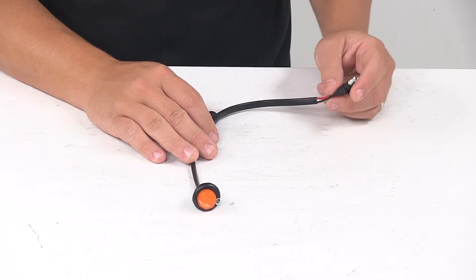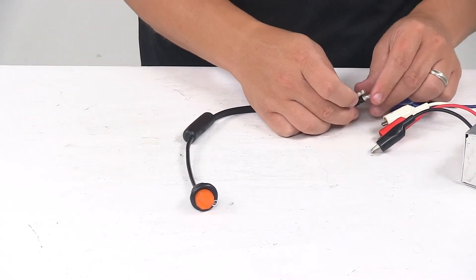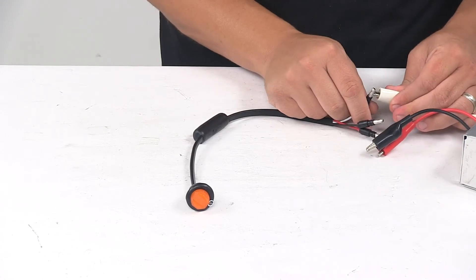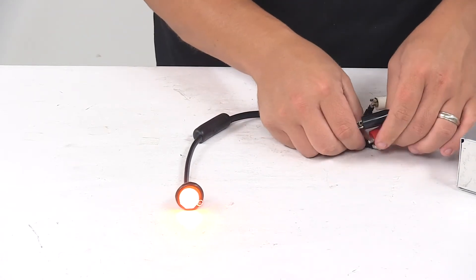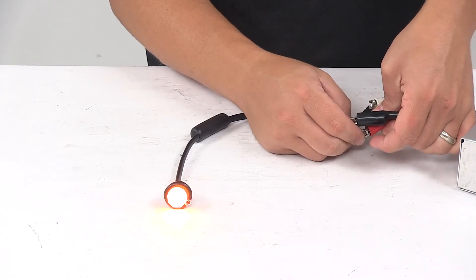We're going to go ahead and hook it up to power so you can see what it looks like with power running to it. The white wire is our ground wire. The black wire is for the power, and the red is for that supplemental turn signal function.